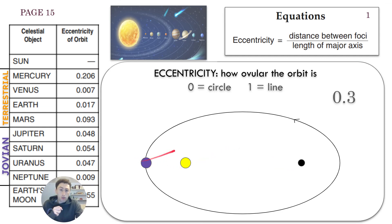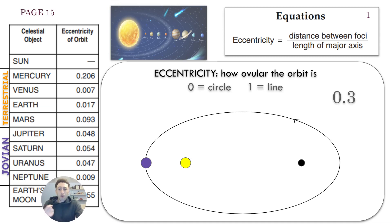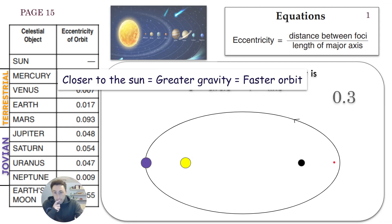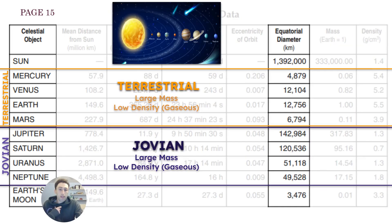The closer a planet is to the sun, the more gravitational attraction there will be. The closer two objects are, the greater the gravitational pull. Therefore, the planet will move the fastest in its orbit when it's closest to the sun, and slowest when it's furthest away. So closer to the sun equals greater gravity and faster orbit.